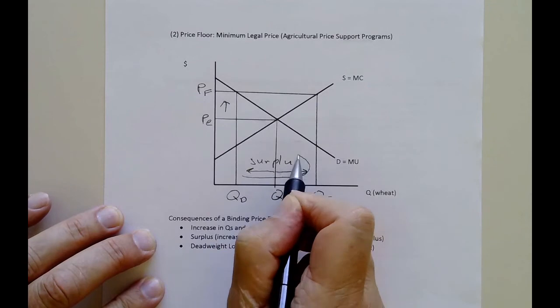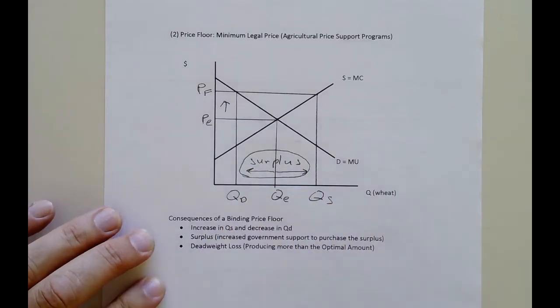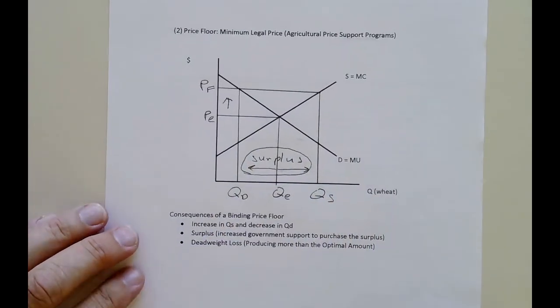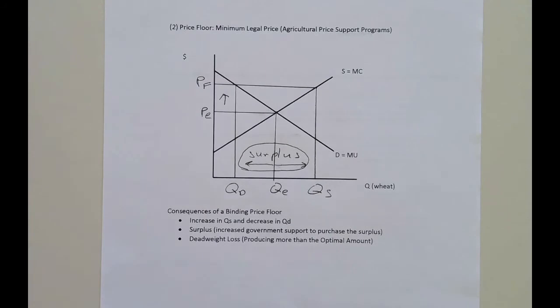And so what they want the government to do, and the government does do this, they want the government to buy the surplus, and the government does. So these programs are in a lot of grains, wheat, soybean, price floor systems. For milk, dairy products, we have price floor systems.